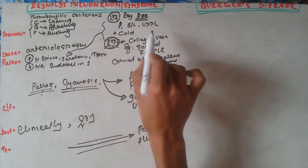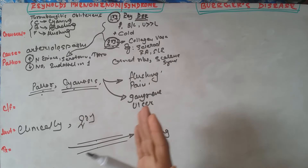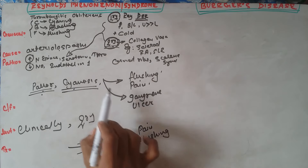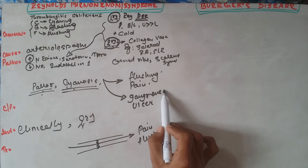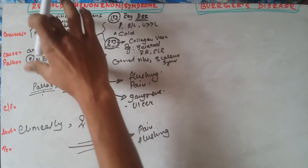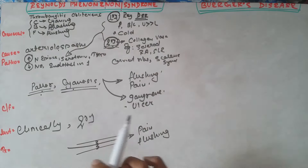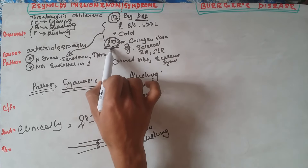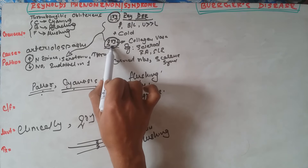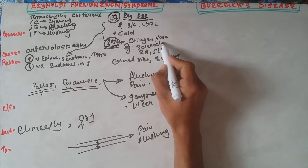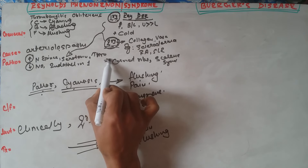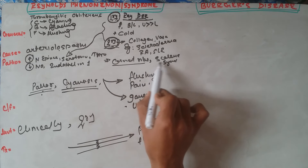If the stimulus or cause persists for a longer period, the limb may undergo gangrene formation. Primary Raynaud's disease is idiopathic, whereas secondary Raynaud's phenomenon is due to collagen vascular diseases like scleroderma, rheumatoid arthritis, or SLE. Some other causes include cervical rib and scalene syndrome.